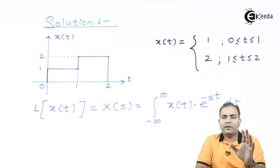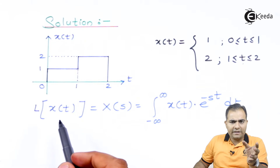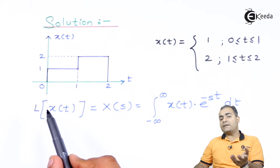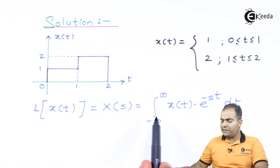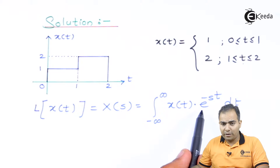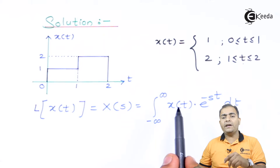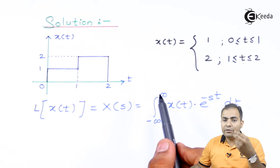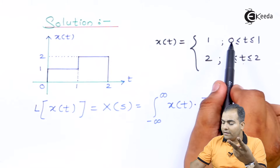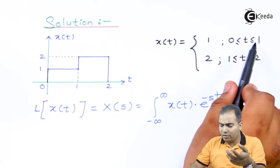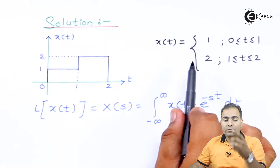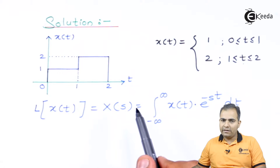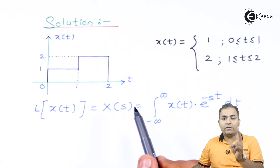By the definition of the Laplace transform, any time signal x(t) is represented in the Laplace domain as X(s). According to the definition, we multiply x(t) by e^(-st) and integrate over the range from minus infinity to infinity. Since x(t) has two different amplitudes in two different ranges — amplitude one from zero to one and amplitude two from one to two — the integration will not be a single one; we perform it twice.